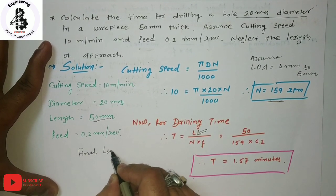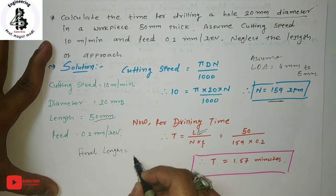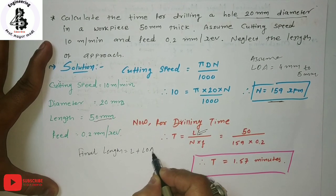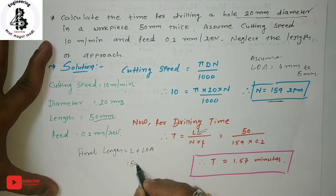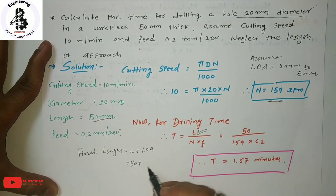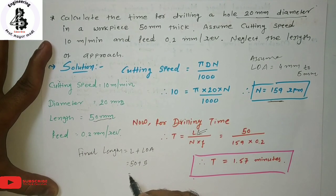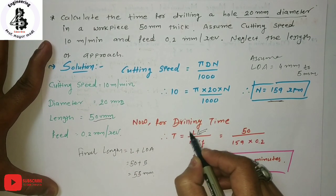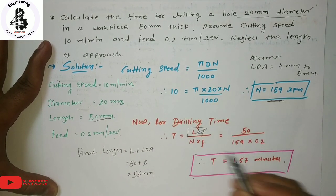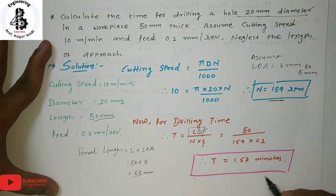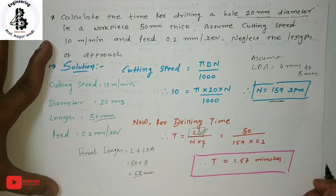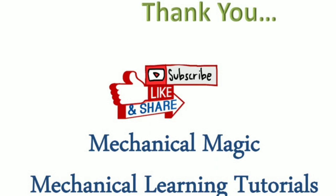If the length of approach is not neglected, the final length equals L plus the length of approach. So in this case, assuming 5 mm approach, the final length would be 55 mm, and you then calculate the machining time using that value. If you like this video, please subscribe and share Mechanical Magic Mechanical Learning Tutorials.